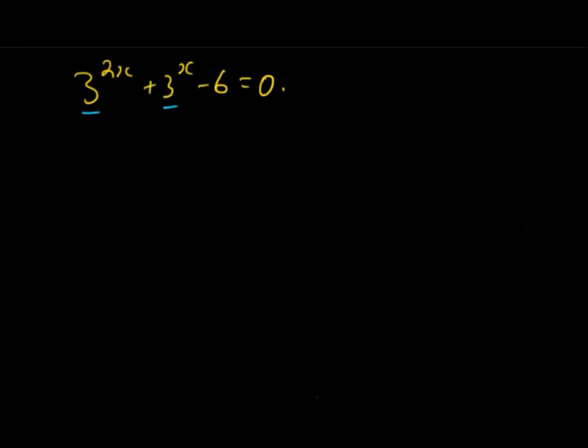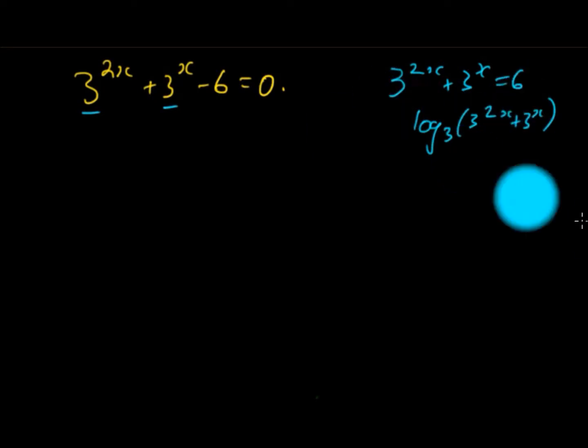If we put to one side so we have 3^(2x) + 3^x = 6 and then we take log of both sides, the problem with that is we're going to end up with log(3^(2x) + 3^x) and you won't be able to simplify that down and get just x.